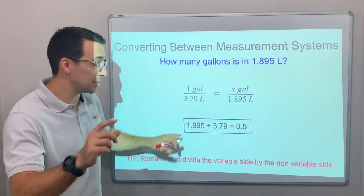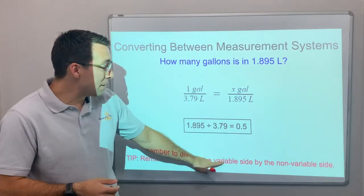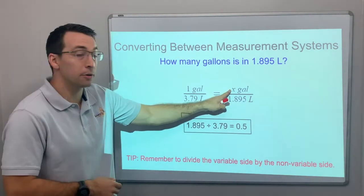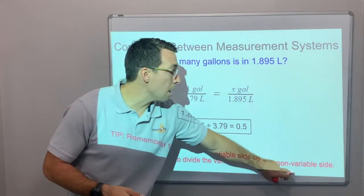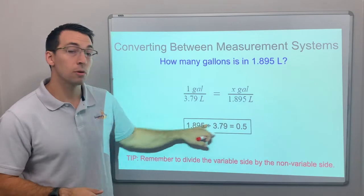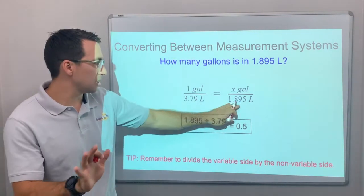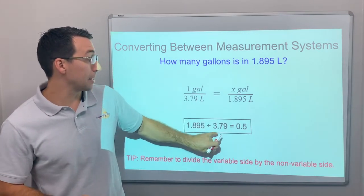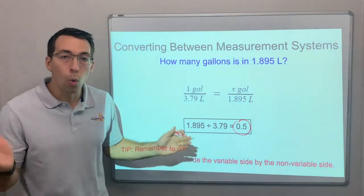But here's the tip: remember to divide the variable side by the non-variable side. So here's the variable x—we'll divide the variable side by the non-variable side. Check this out: the answer to this division problem, 1.895 divided by 3.79, is 0.5.